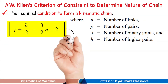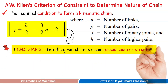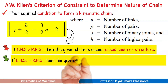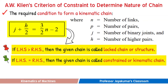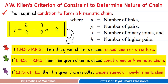According to AW Klein's criterion of constraint, in the equation j + h/2 = (3/2)n − 2: if the left-hand side is greater than the right-hand side, then the given chain is a locked chain or structure. If the left-hand side is equal to the right-hand side, then the given chain is a constrained kinematic chain. If the left-hand side is less than the right-hand side, then the given chain is a non-kinematic or unconstrained chain.